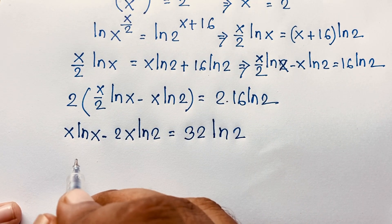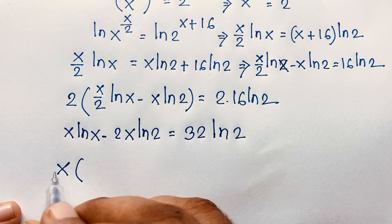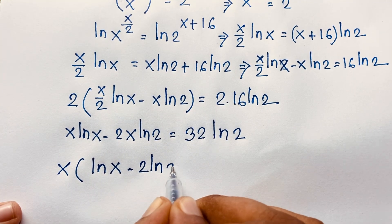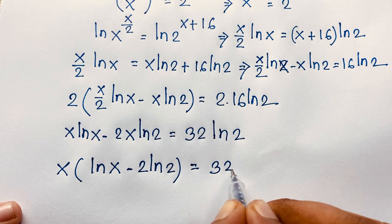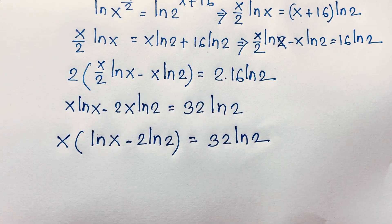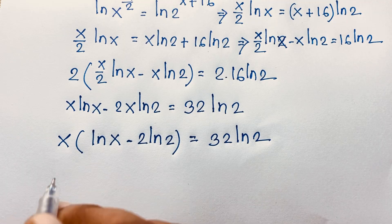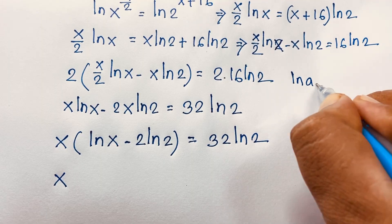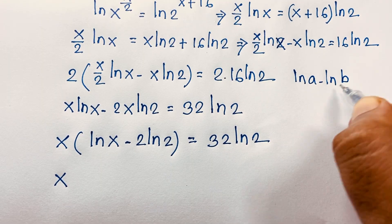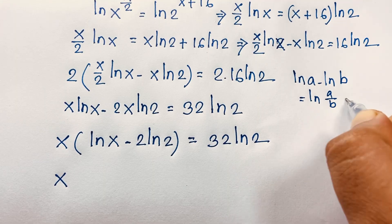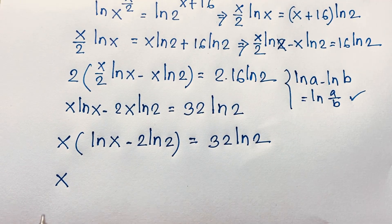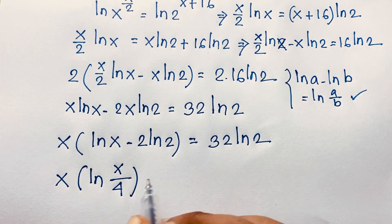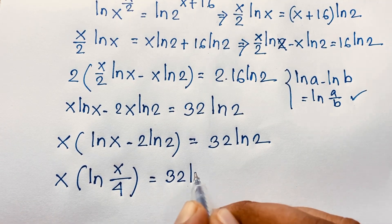Now, if I take x as common: x times ln x minus 2 ln 2 is equal to 32 ln 2. Now applying the log formula ln a minus ln b equals ln(a over b), so ln x minus ln 4 — since 2 ln 2 equals ln 4 — becomes ln(x over 4). So: x times ln(x over 4) is equal to 32 ln 2.